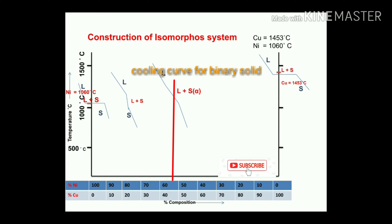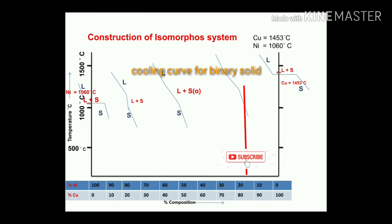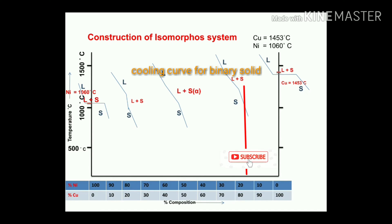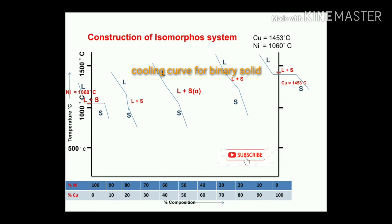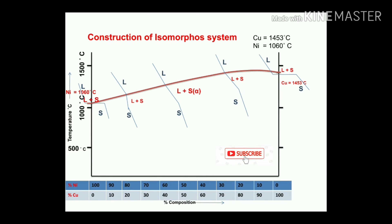The solid phase is a single alpha phase of both copper and nickel. For 20% nickel and 80% copper, the cooling curve similarly shows liquid, liquid plus solid, and solid. Now I want to draw a common line passing through the starting point of solidification for each cooling curve of different compositions — that line is called the liquidus line, above which everything is 100% liquid.